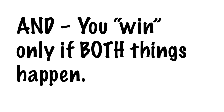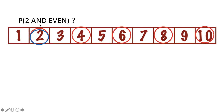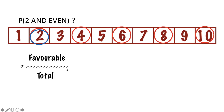Let's say you run into a question that talks about AND. In an AND question, you win only if both things happen. Instead of two or even, it says two and even. That AND means I only win if both conditions are true. Which outcomes make the first condition — two — come true? Only one: the number two. Which make even come true? Two, four, six, eight, and ten. But since it's AND, I can't count all five circled outcomes. It's only the ones circled both times — and that's just two.